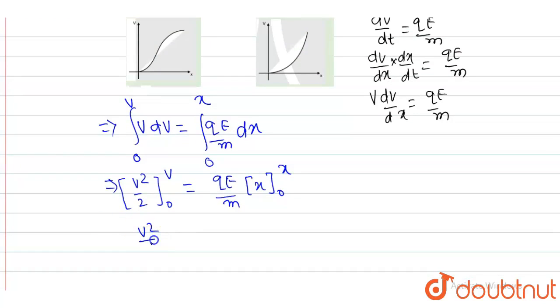So it is v²/2 minus 0 equals qE/m times x. So I can write v² equals 2qE/m times x. This is the relation between v and x.